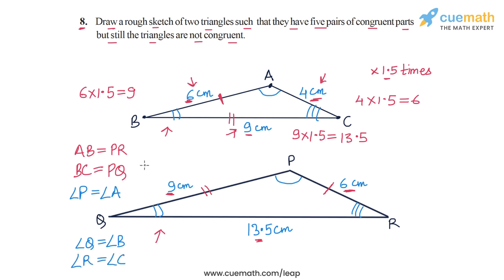So triangles ABC and PQR are two triangles in which two side pairs and all three angle pairs are equal — giving five congruent parts — and yet we can clearly see that the two triangles are not congruent. That is one possible solution, and I want you to think about more possible solutions and share them in the comment section. We have completed question number eight.